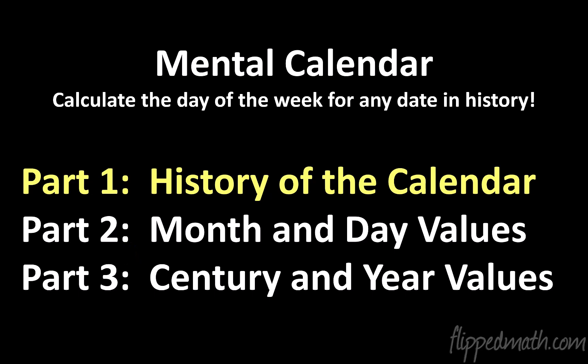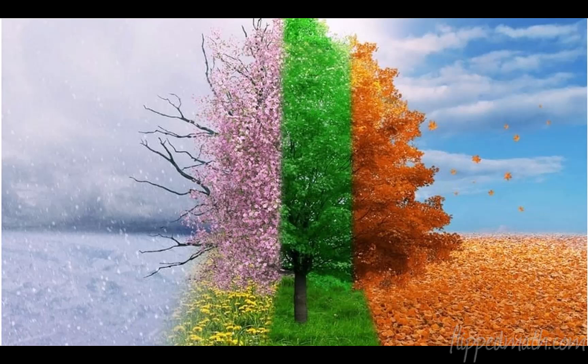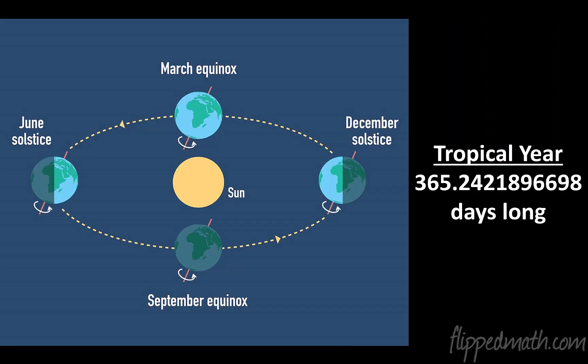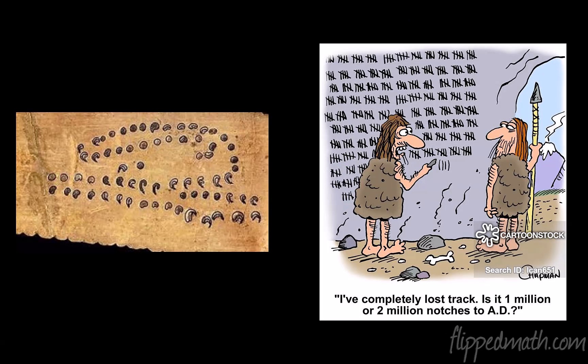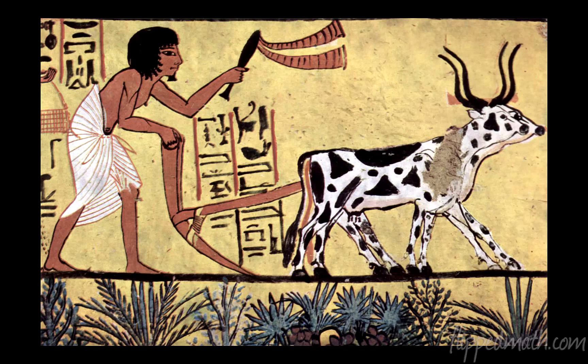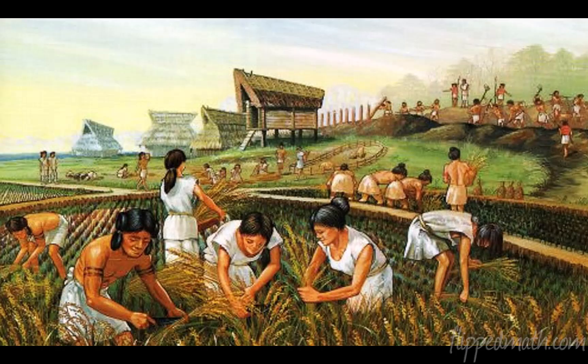Let's begin. We have the cycle of seasons — spring, summer, autumn, winter — going over and over again. This is known as the tropical year, and the tropical year can be measured very precisely: it is 365.2421896698 days long. In other words, a tropical year is how long it takes the Earth to revolve around the Sun, and for thousands of years humans have tried to figure out a way to measure the passing of time and these seasons.